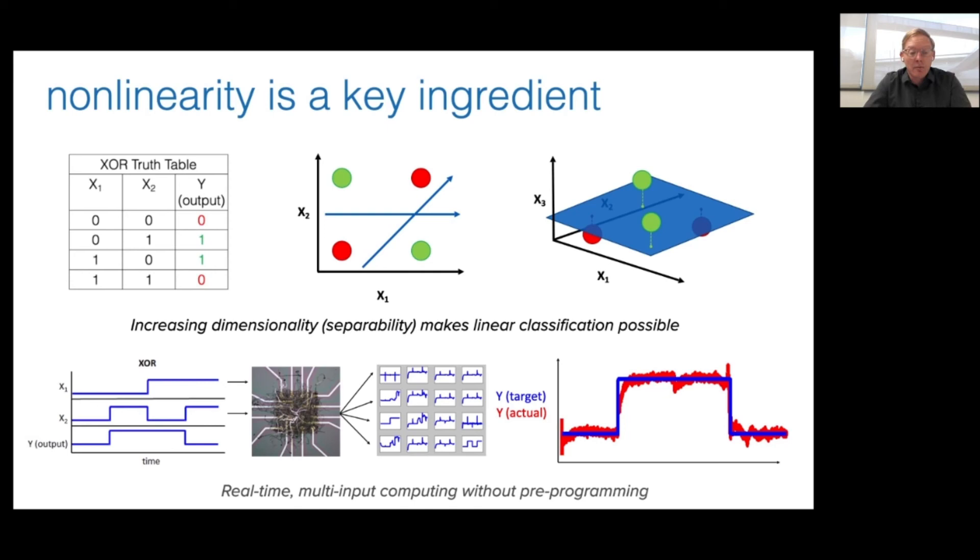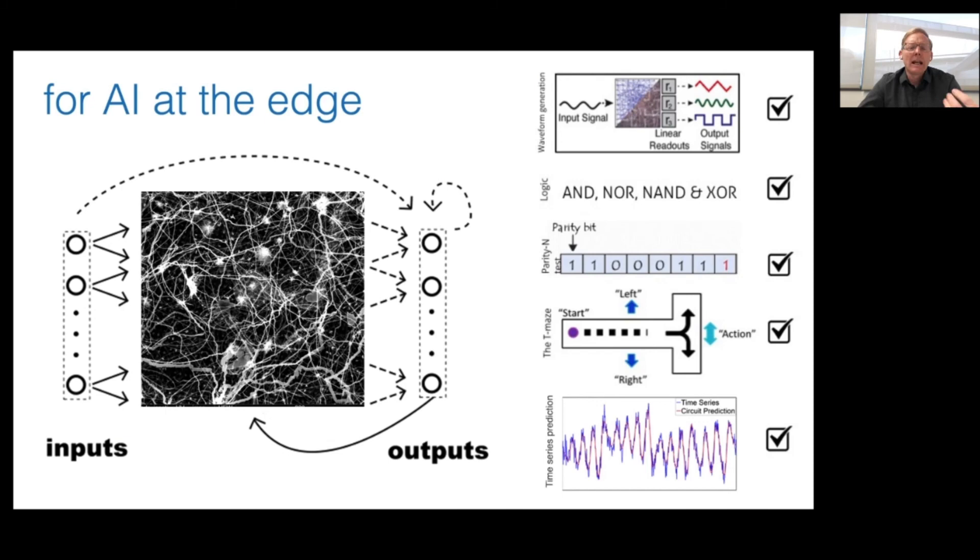And so we've implemented this. This is an example where we deliver the signals of an XOR operation into one of our nanowire networks. It is nonlinearly transformed into a higher dimensional representation. And we can classify the output of that in real time without the need for any pre-programming. So this device is able to perform, for example, the XOR operation specifically because of its nonlinear character.